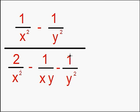We'll try one more example, this time a little more difficult. We have 1 over x squared minus 1 over y squared all over... Don't get intimidated by the size of this problem. The process is still the same. We're still going to look for our lowest common denominator of each one of the tiny fractions.